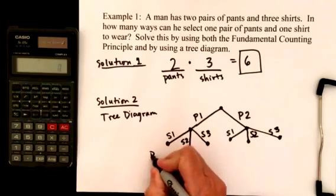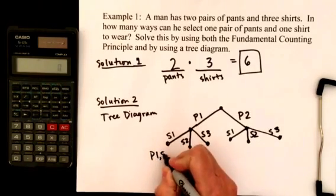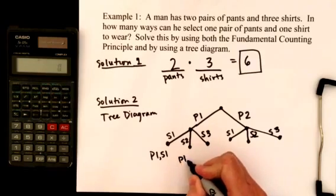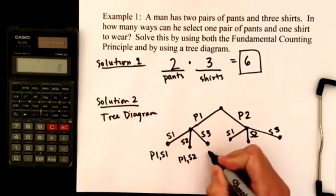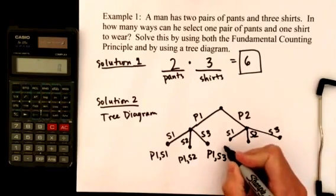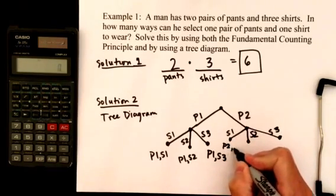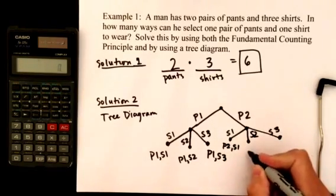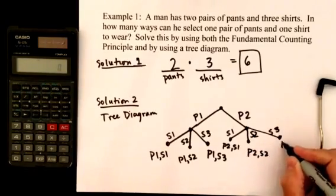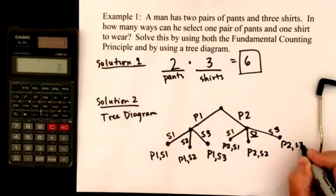One of them is pants one with shirt one. He could have selected pants one with shirt two. He could have selected pants one with shirt three. Or he could have selected pants two with shirt one, or pants two with shirt two, or pants two with shirt three.